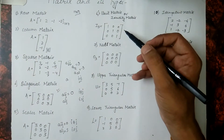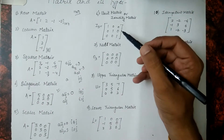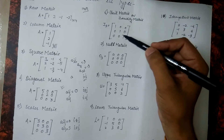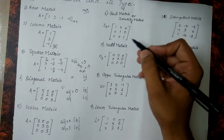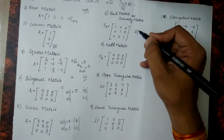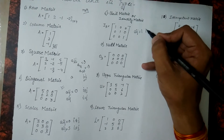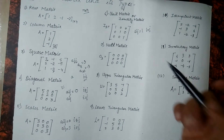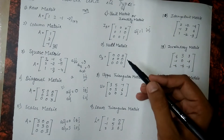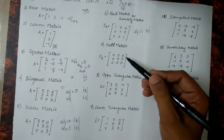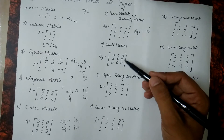The next matrix which comes into the picture is the unit matrix. The unit matrix comprises of elements in the leading diagonal where each and every element is 1. The condition is: a of ij equals to 1 if i equals to j, and for the rest of the cases we have value 0. Our next matrix is the null matrix. The matrix which has each and every element 0 is the null matrix.